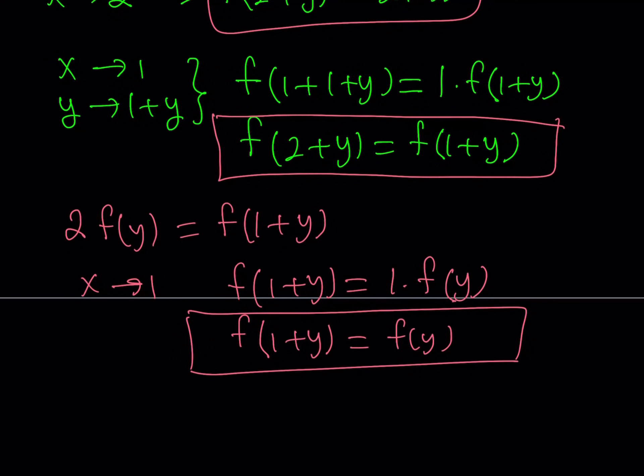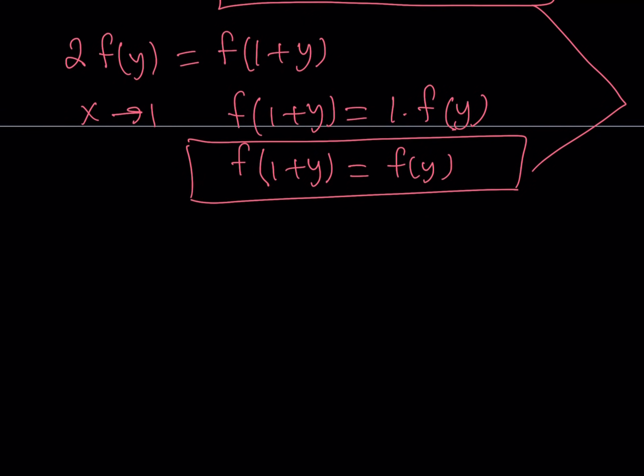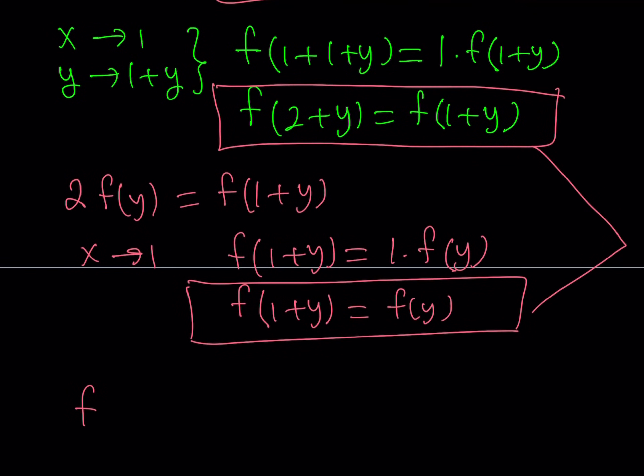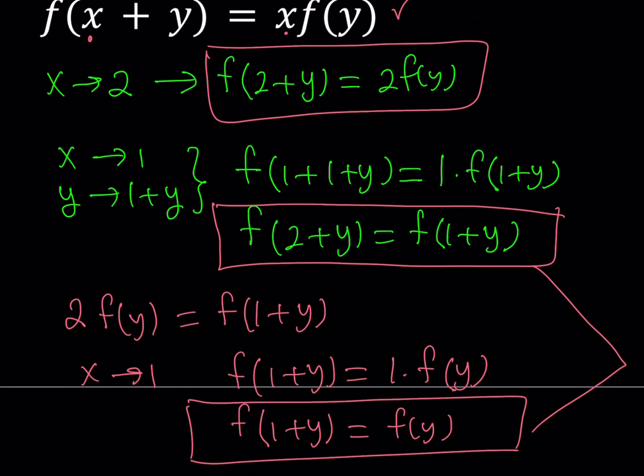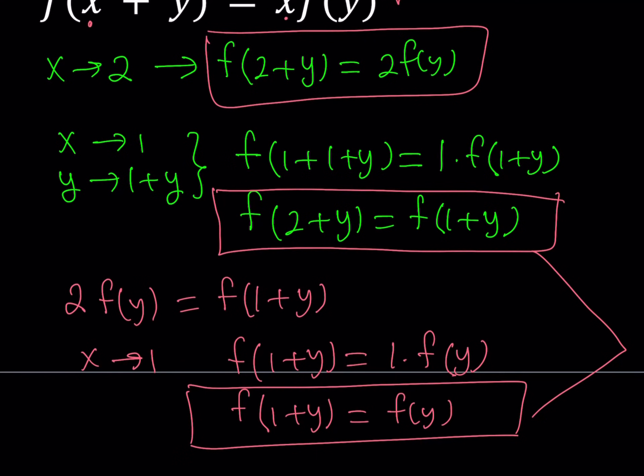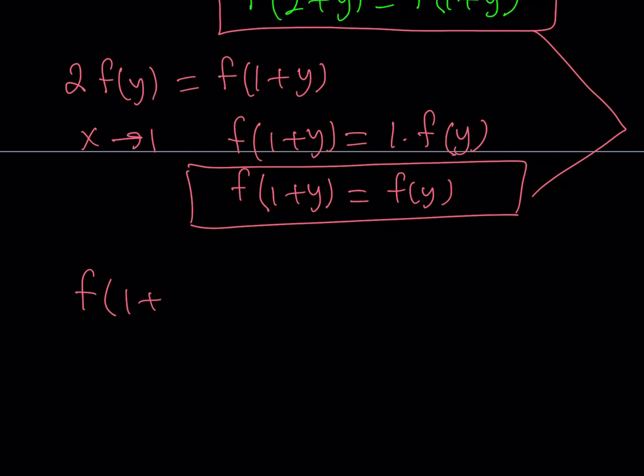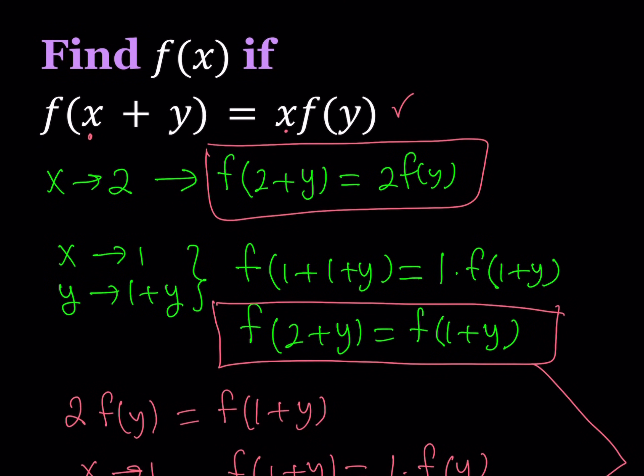Since f of 1 plus y is equal to f of y, I can just put these together and write this as f of 2 plus y. And remember, f of 2 plus y is equal to 2 times f of y. So, that means 2 f of y is equal to, this means f of 1 plus y can be written as 2 f of y. Okay, I'm kind of confusing myself here.